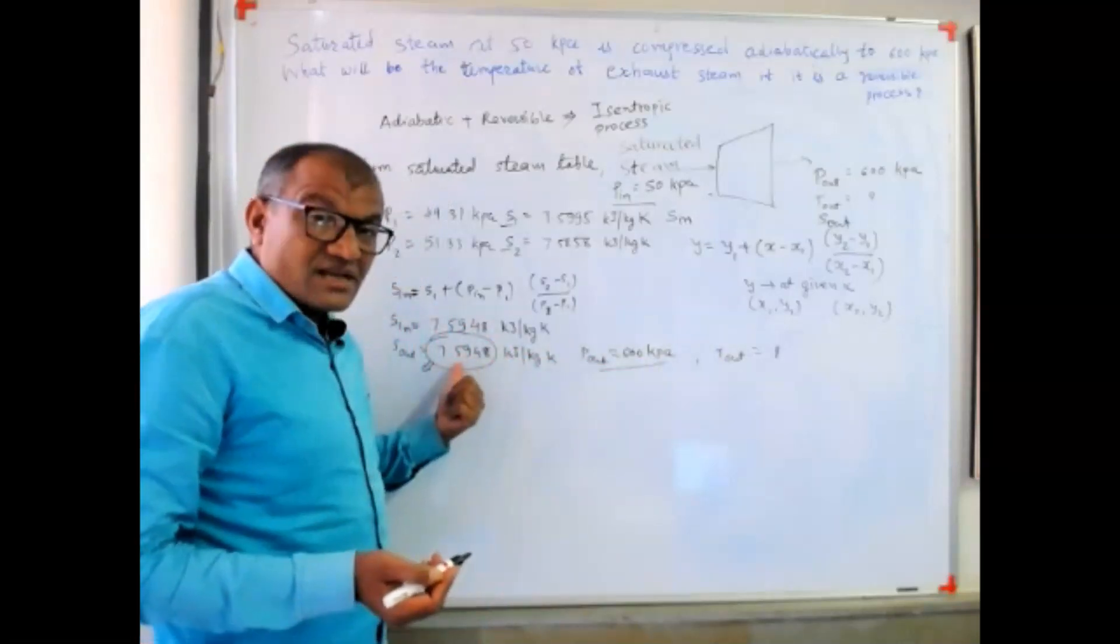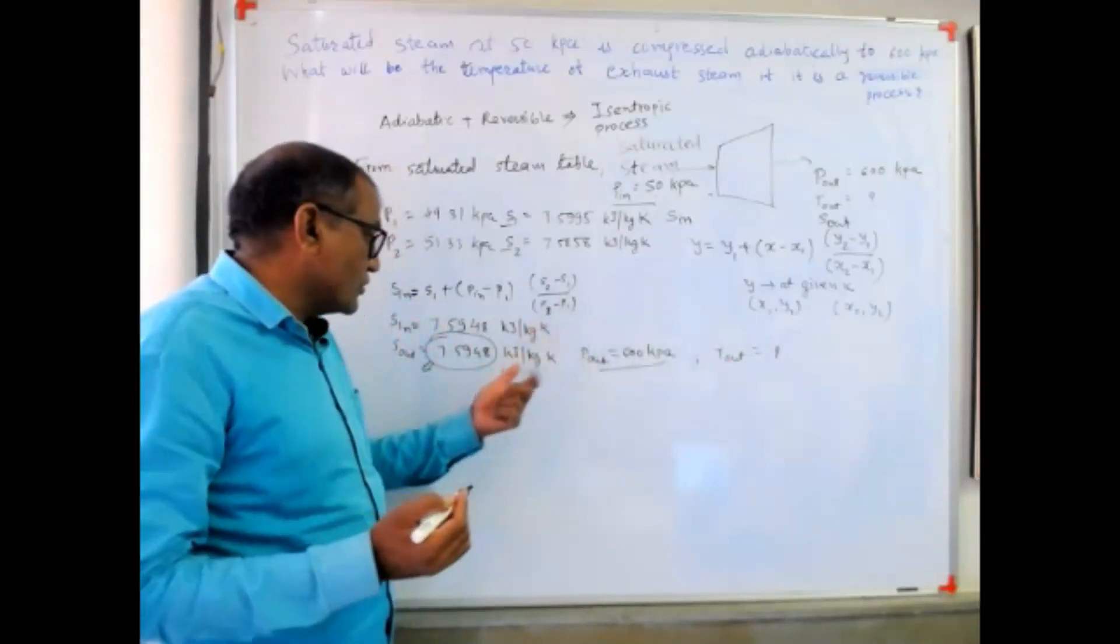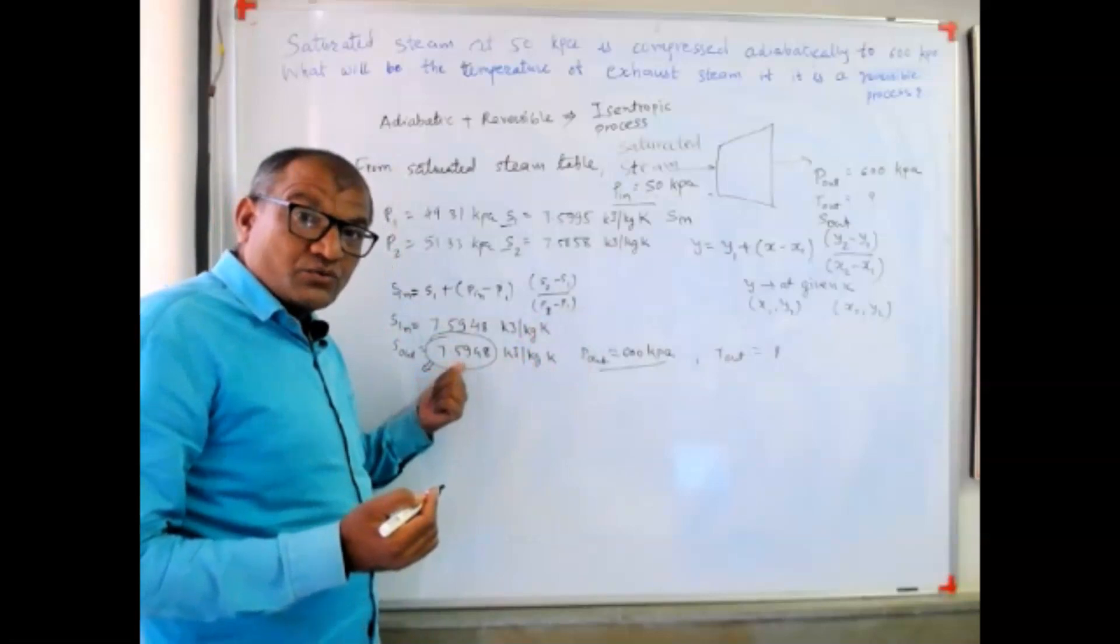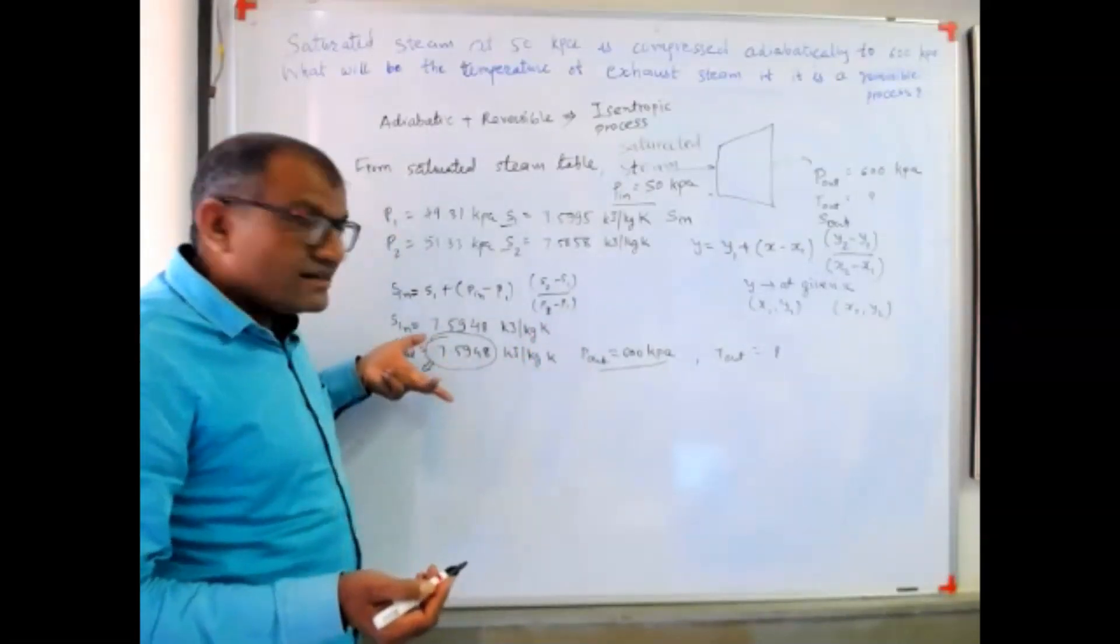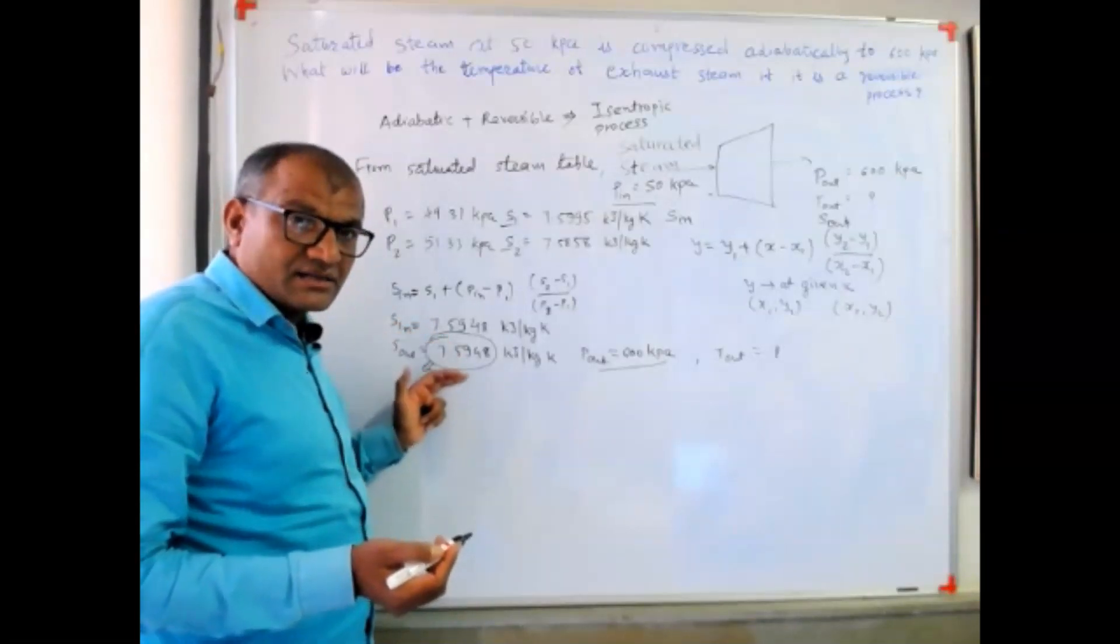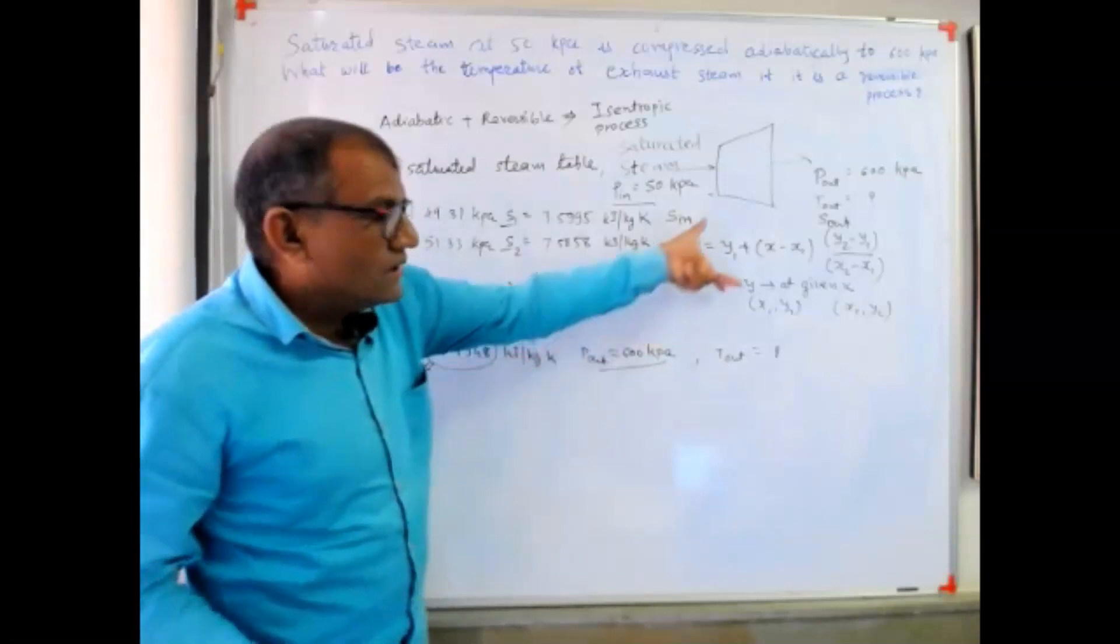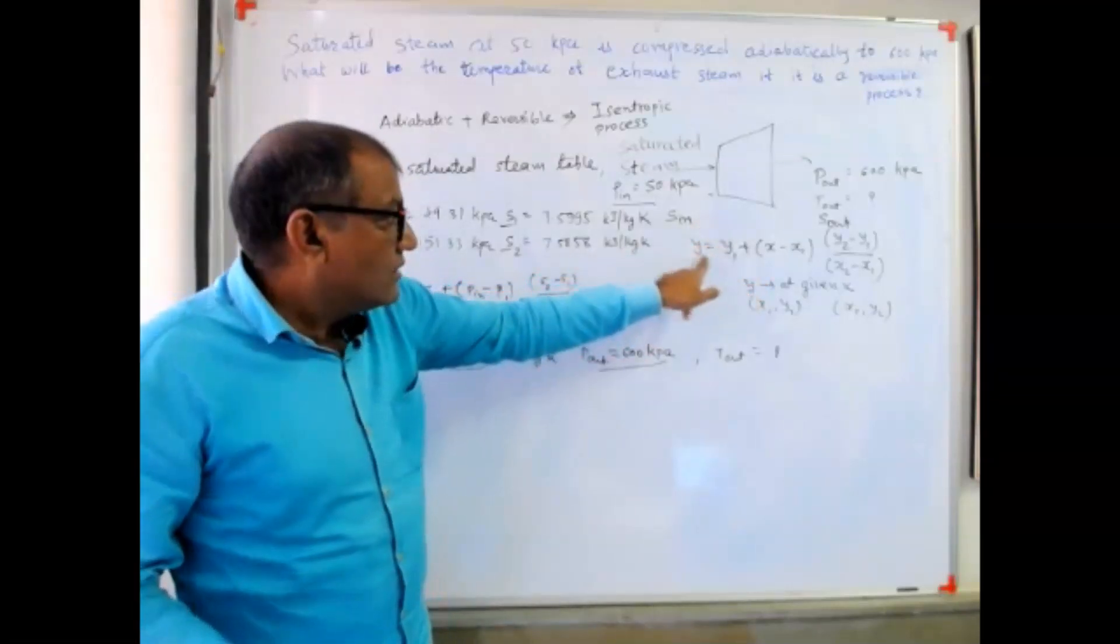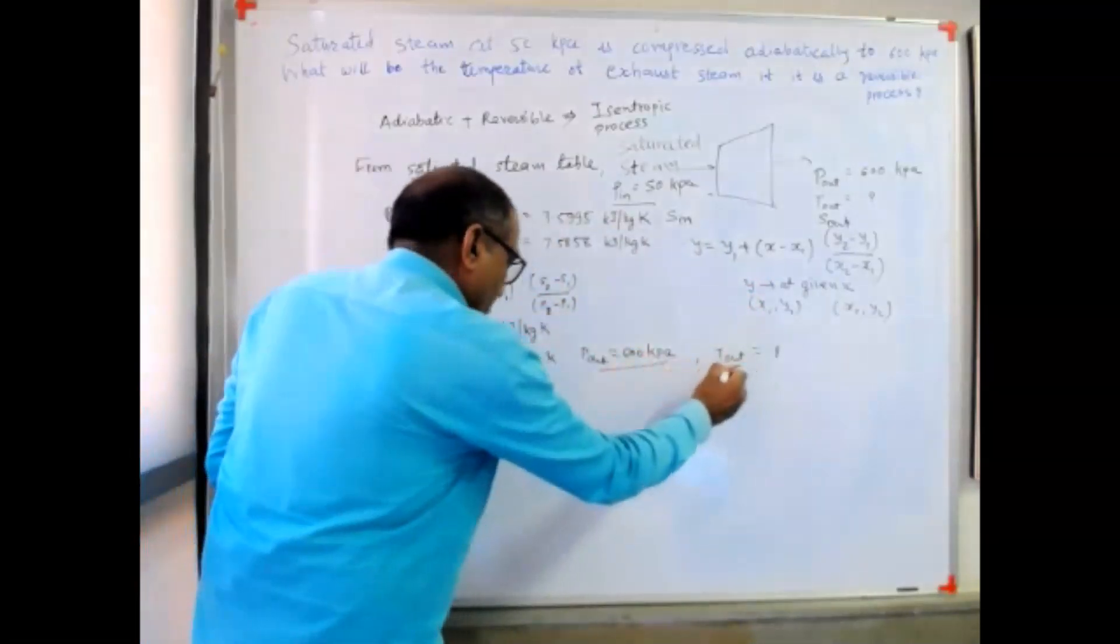If you are able to find the exact value then you can consider the temperature at which this is the entropy value. But in superheated steam table also I am not able to find this exact value. I can get different values lower than this one and higher than this one. I am going to do again linear interpolation to calculate t_out.